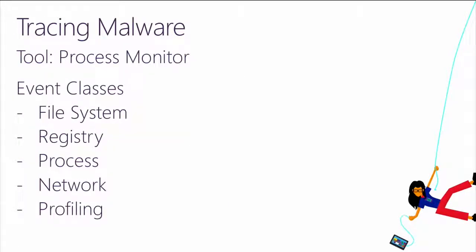Then you can trace the malware and see what's happening — that's what we actually did with Process Monitor. We were looking at what it was doing in the registry to find out what was writing into the RunOnce key to ensure the software was staying there. Process Monitor unveiled that it was a child process of another process recreating the RunOnce key.